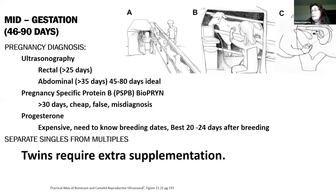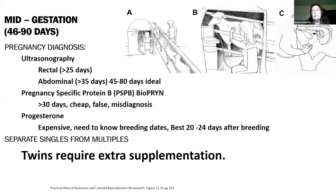Mid-gestation is a good time to have animals ultrasounded — one, are they pregnant? And two, are there singles or multiples? That can help us manage them better nutritionally. If we're feeding everybody the same way, we may have ewes with singles becoming over-conditioned, and the opposite can happen too — animals with multiples may not be getting the plane of nutrition they need. Aside from ultrasounding, we can also do blood tests to determine pregnancy.